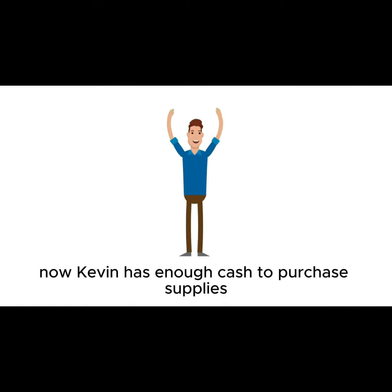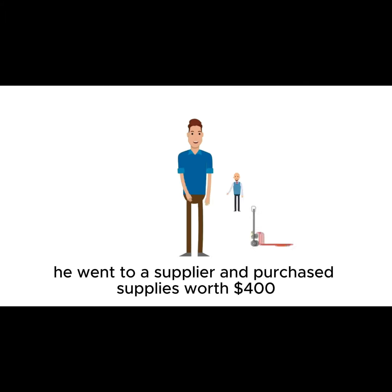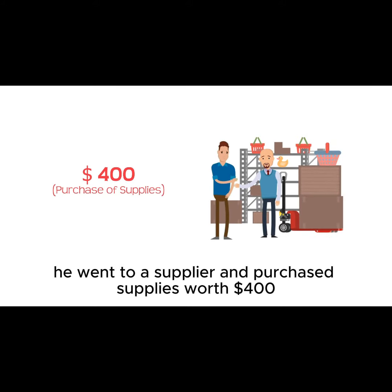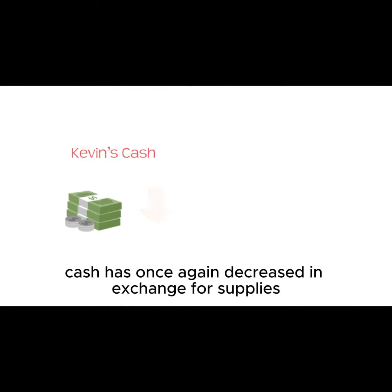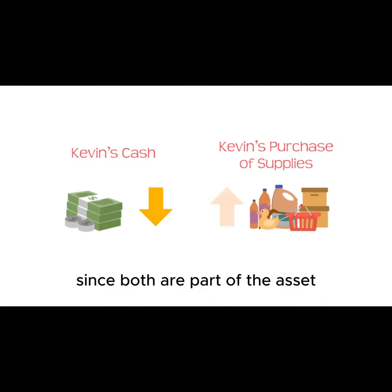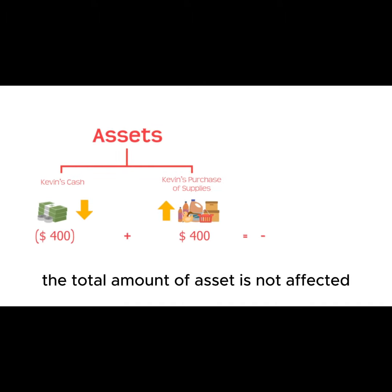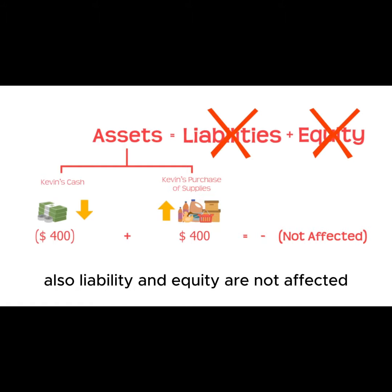Now, Kevin has enough cash to purchase supplies. He went to a supplier and purchased supplies worth $400. In this transaction, cash has once again decreased in exchange for supplies. Since both are part of the asset, the total amount of assets is not affected. Also, liability and equity are not affected.